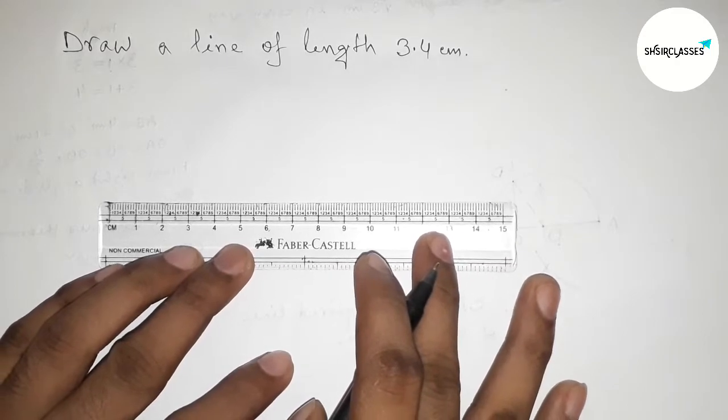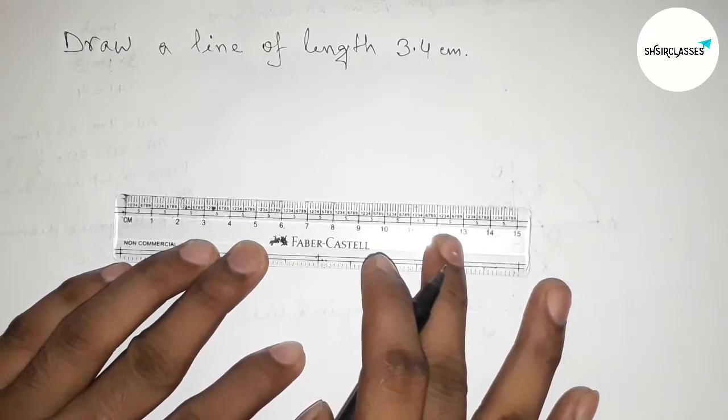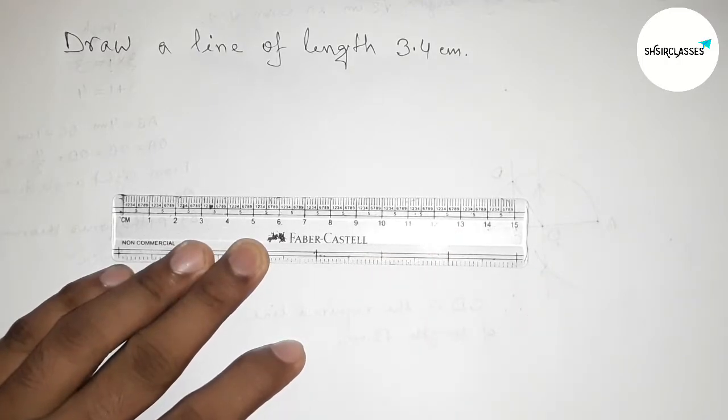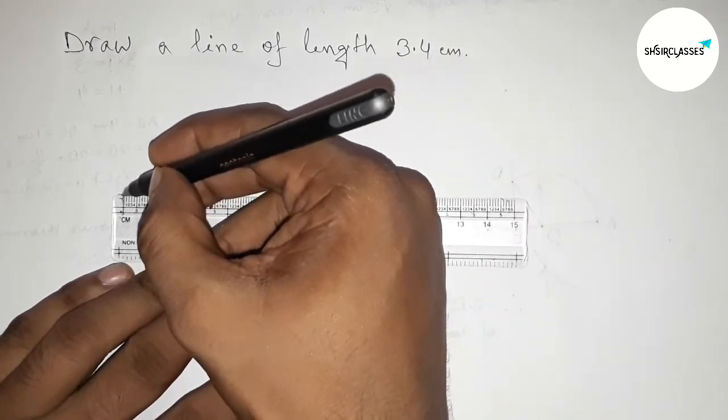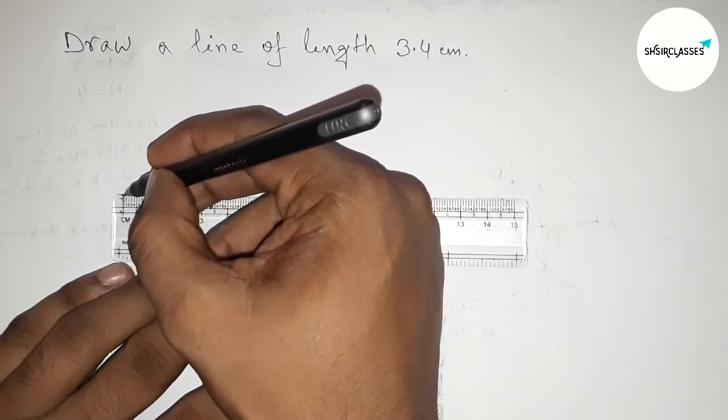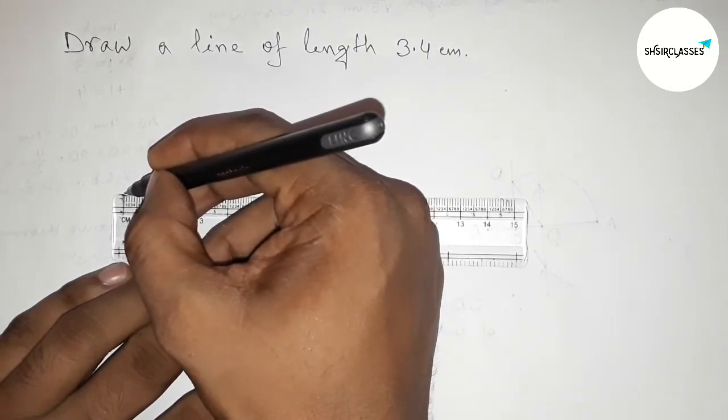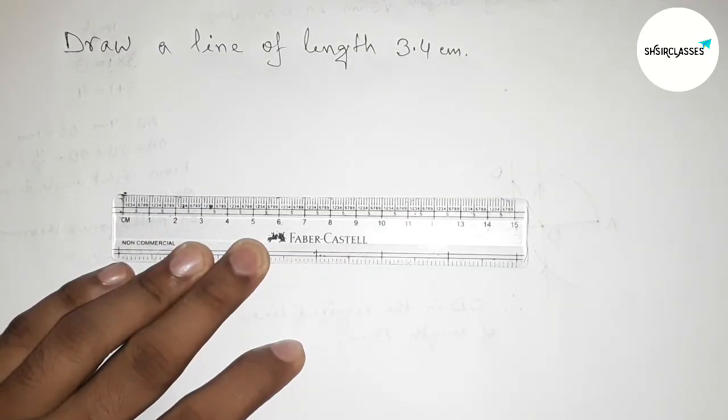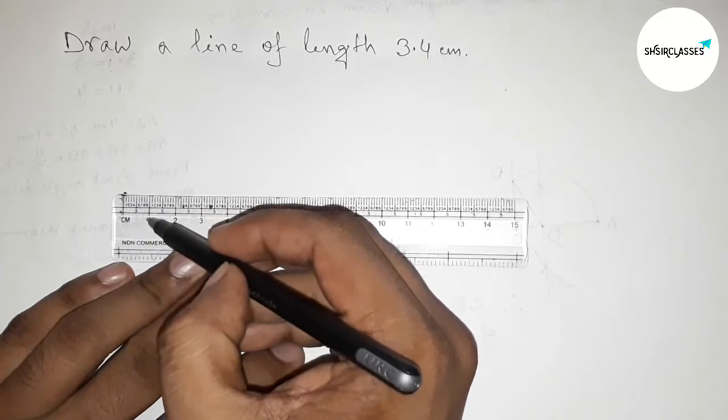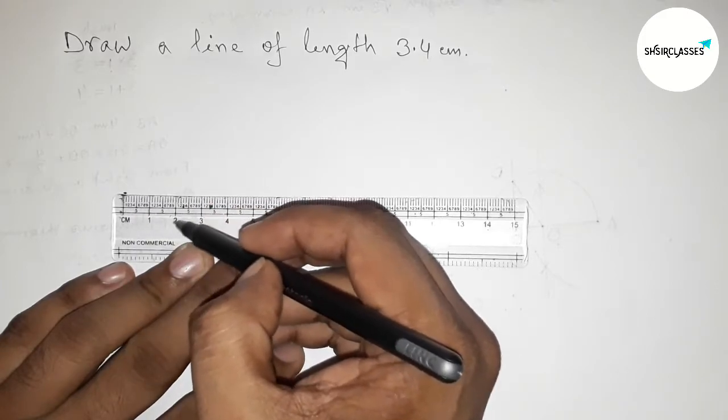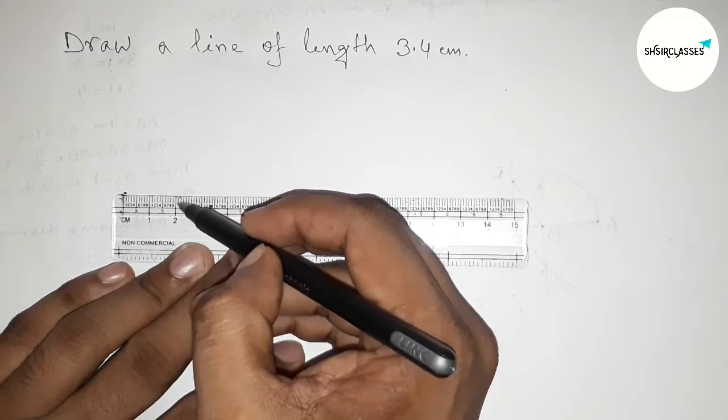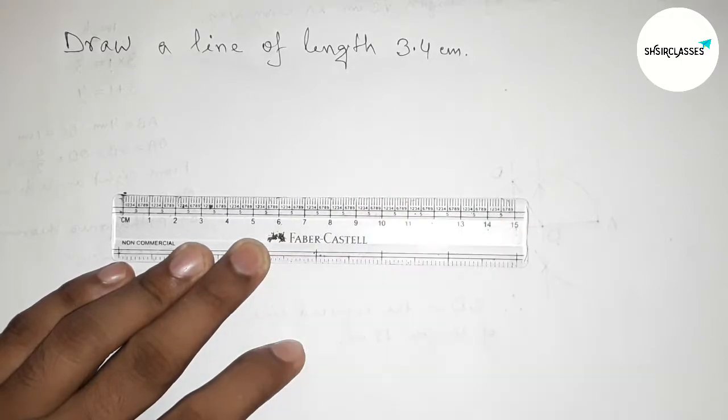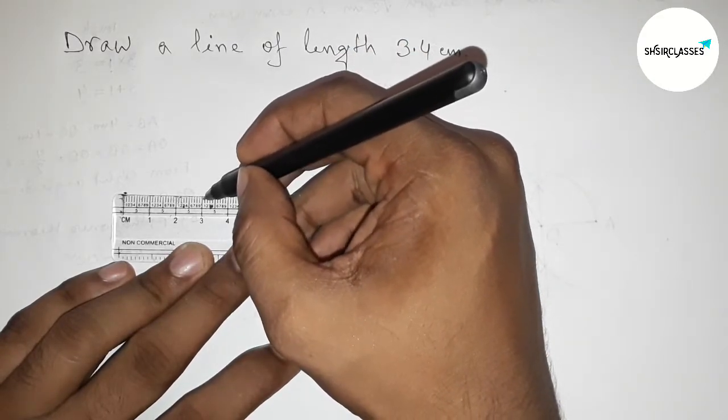Okay, so first putting the scale by this way and next measuring the length 3.4 centimeter. So this is the starting zero, so first marking this. This is starting zero. Now counting 3.4, so this is 1 centimeter, and this is 2 centimeter, and this is 3 centimeter.